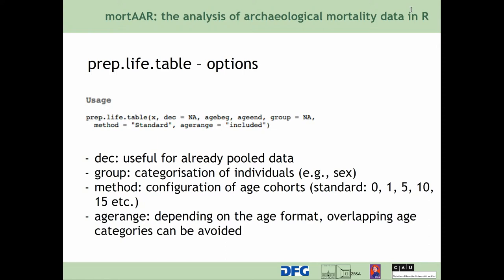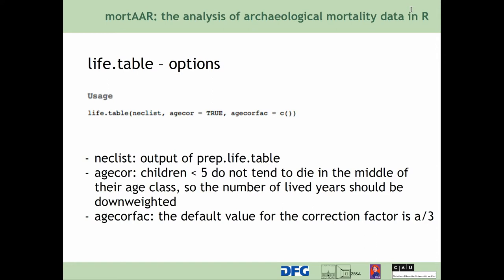The age range setting is set to inclusive by default. This means if you have an individual aged 20 to 40, it includes 40 as a possible age. The excluded setting would mean that 40 is excluded from that age class. The life table function itself does all the computation necessary. You put in the result of the prep_life_table function, and then you can choose if you want an age correction for children under five, who tend to die not in the middle of their age class but earlier. You can also specify which kind of age correction to use — the standard is one-third.